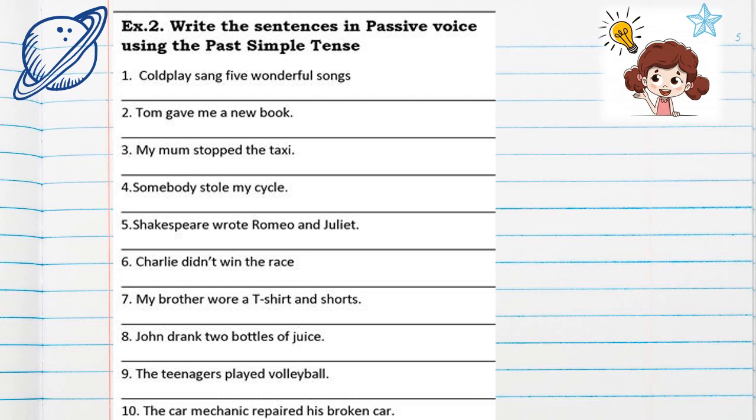Second one: Tom gave me a new book. How can we change this? A new book is the object. Number three: my mom stopped the taxi. The object is the taxi, the verb is 'stopped', and mom is the subject. Number four: somebody stole my cycle. My cycle is the object. 'Stole' is the verb in the past. Somebody is the subject — how can we change this into passive voice? This is the object.